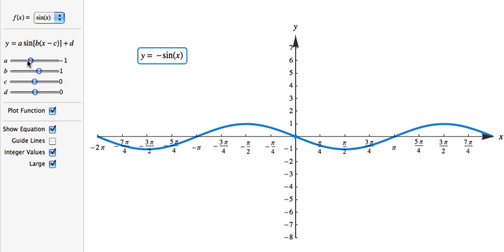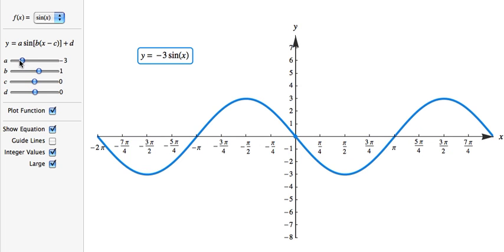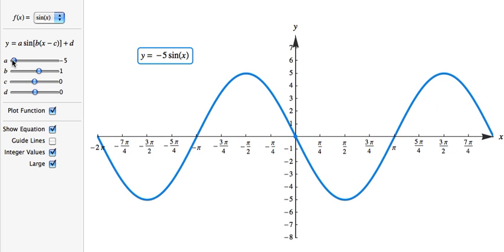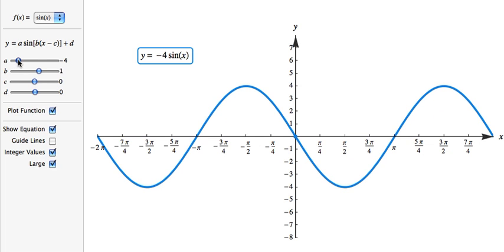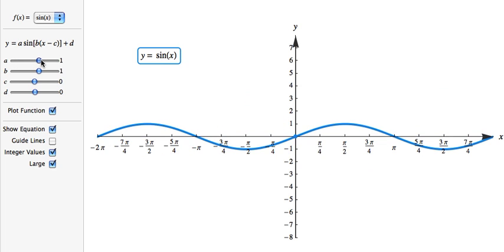And then again, as the value of a increases now in the negative direction, we can see that it affects the range. So we'll go back to the original sine of x. And the range is from negative 1 to 1. And the domain is all real numbers. But again, the sine of x can't be bigger than 1. Can't be less than negative 1.